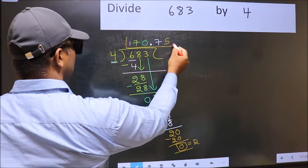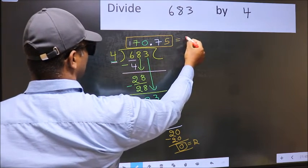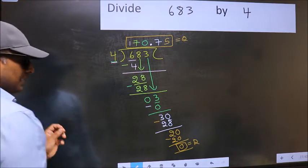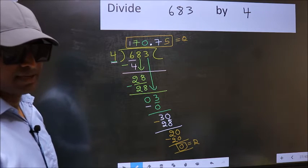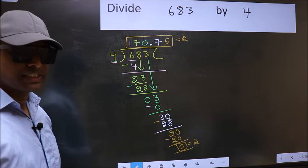And this is our quotient. Did you understand where the mistake happens? You should not make that mistake.